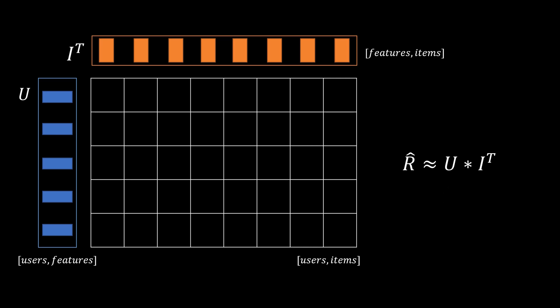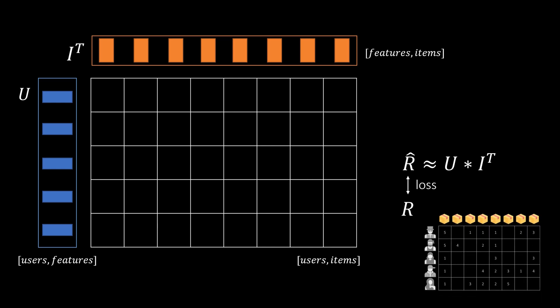We initialize the latent codes somehow for example randomly and because we have the true ratings for some of these cells we can very easily optimize the latent codes with respect to some loss functions such as mean squared error.